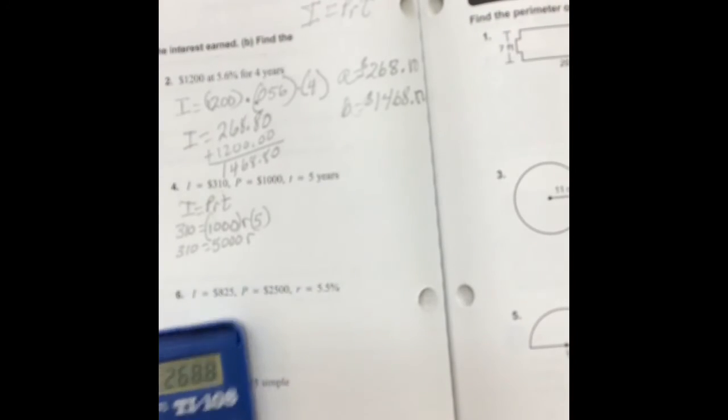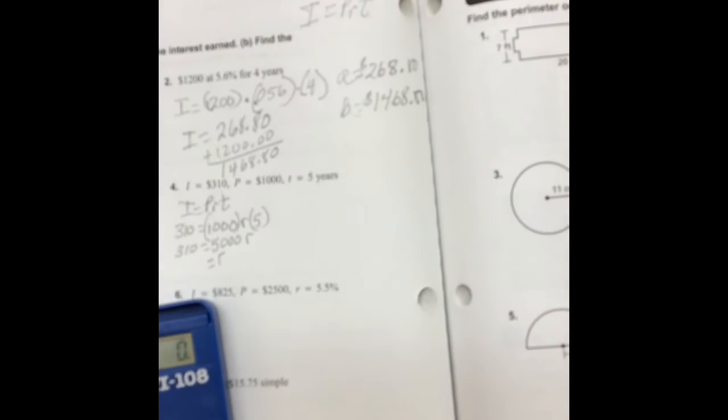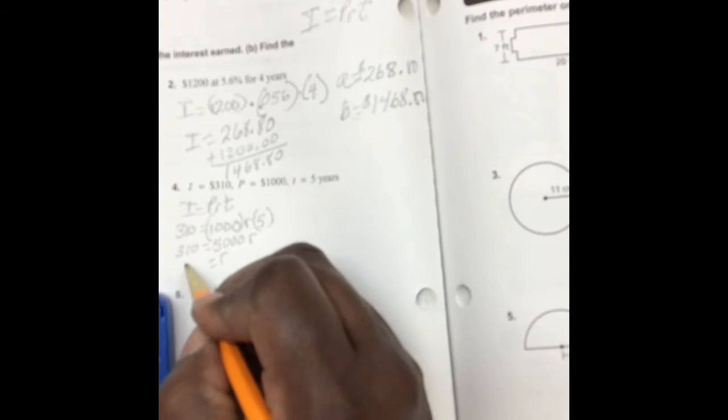Divide both sides by 5000 and R is equal to 2. So we take our 310 divided by 5000 and we have 0.062.